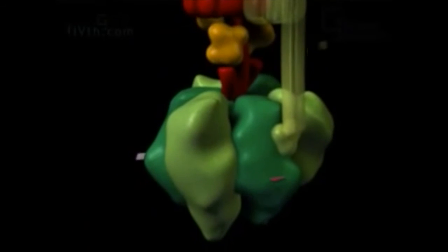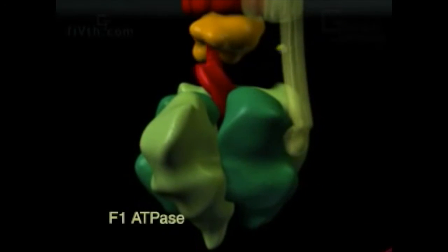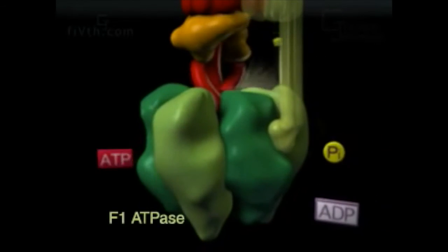The rotational energy is transmitted to the shaft attached to the rotor that penetrates deep into the center of the F1 ATPase, which catalyzes the formation of ATP.